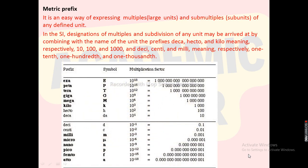Metric prefix list: Exa (symbol E) — 10¹⁸; Peta (symbol P) — 10¹⁵; Tera — 10¹²; Giga — 10⁹; Mega — 10⁶; Kilo — 10³; Hecto — 10²; Deca — 10¹; Deci — 10⁻¹; Centi — 10⁻²; Milli — 10⁻³; Micro — 10⁻⁶; Nano — 10⁻⁹; Pico — 10⁻¹²; Femto — 10⁻¹⁵; Atto — 10⁻¹⁸.